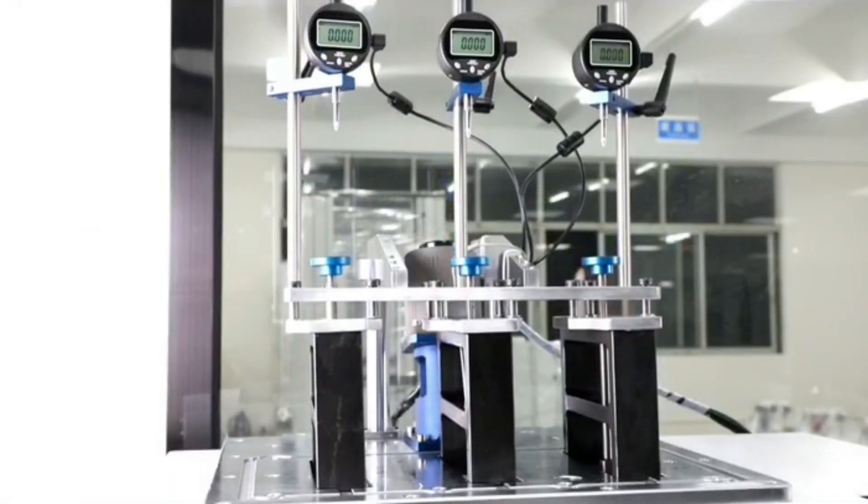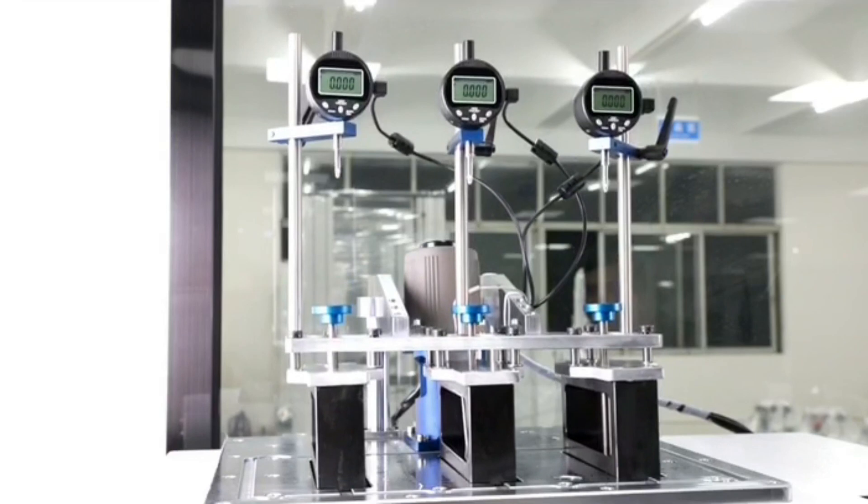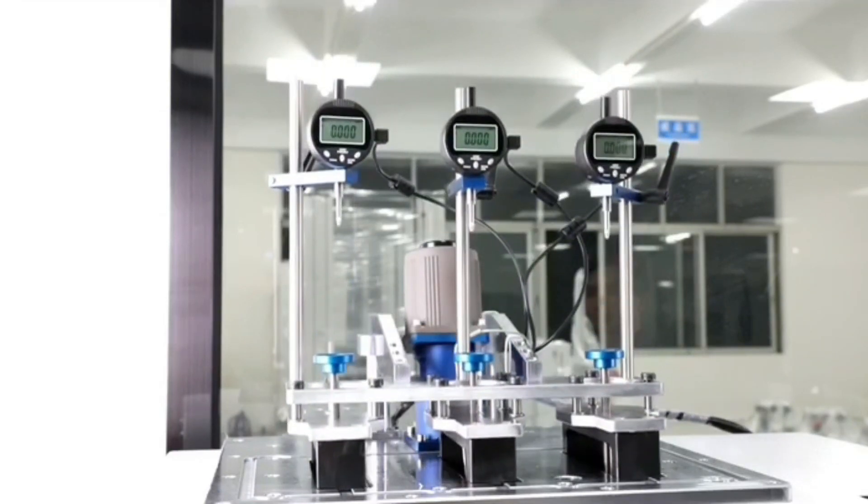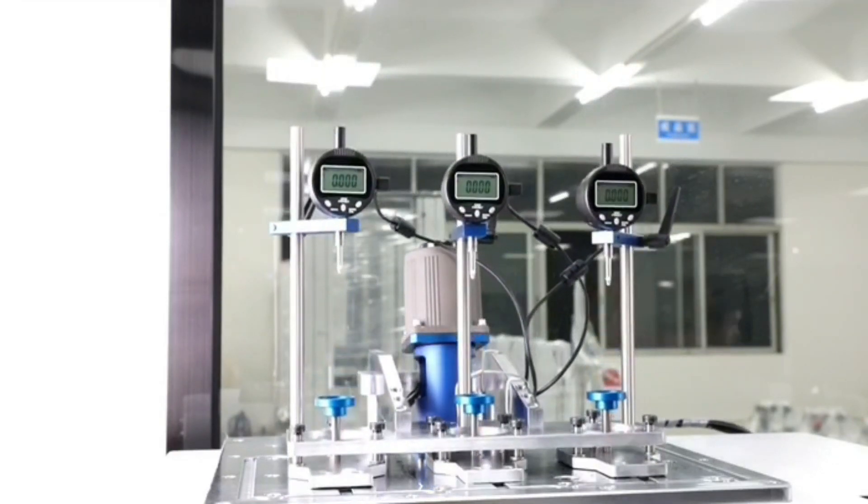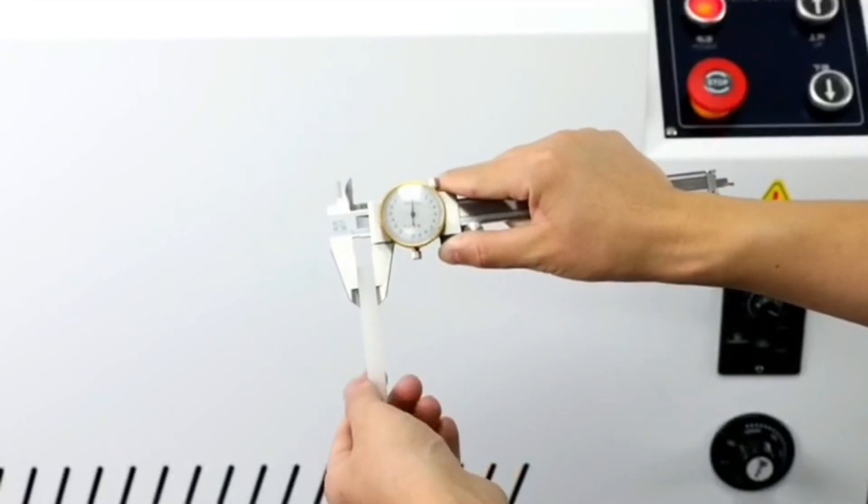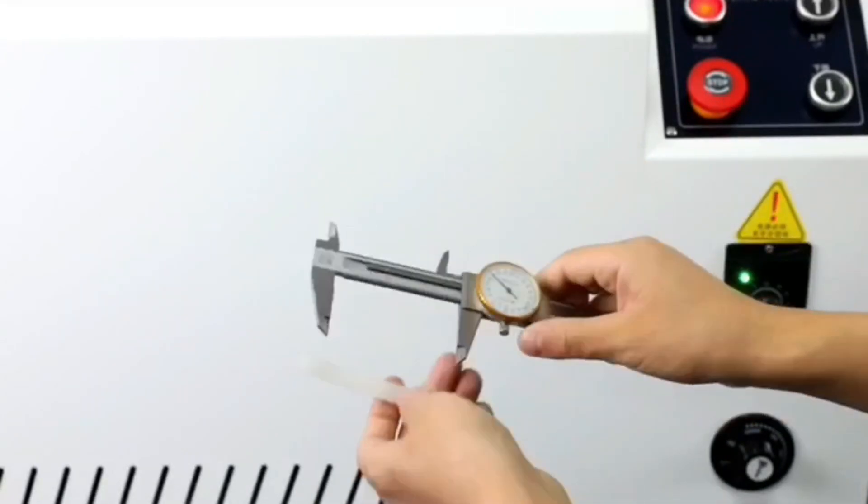The Vicket Softening Point is the temperature at which a pressure of 10 N or 50 N is applied to a sample strip, and the pressure needle is inserted 1 millimeter into the strip at a rate of 50 degrees Celsius or 120 degrees Celsius per hour.